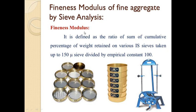Fineness modulus is defined as the ratio of the sum of cumulative percentages of weight retained on the various IS sieves up to a 150 micron sieve, divided by the empirical constant 100. We take into account sieves up to 150 micron — not the 75 micron pan. So the sum of cumulative percentage weight retained on IS sieves up to 150 micron, divided by 100, gives the fineness modulus.